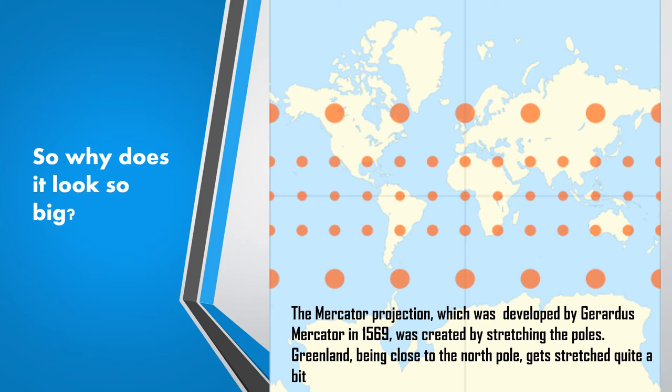The Mercator projection, which was developed by Gerardus Mercator in 1569, was created by stretching the poles. The circles in the middle are small, but as they go closer to the poles, they are stretched more. That's what happens to the countries as well — countries close to the poles are stretched quite a lot.